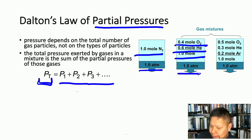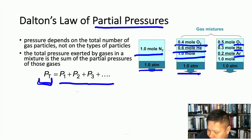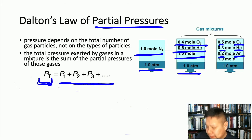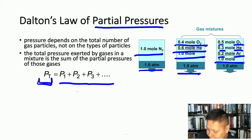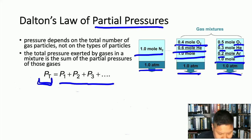You can combine three gases — oxygen, helium, and argon — at 0.5, 0.3, and 0.2 moles respectively, totaling 1 mole of gas, and that mixture also exerts 1 atm of total pressure.